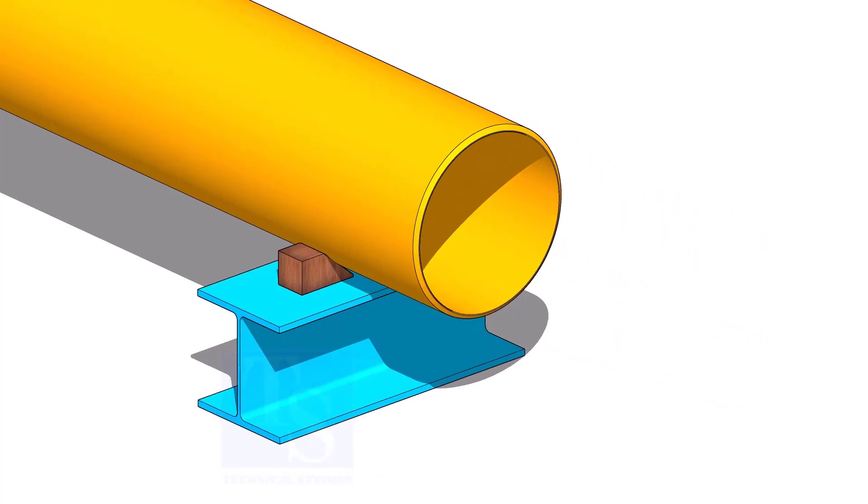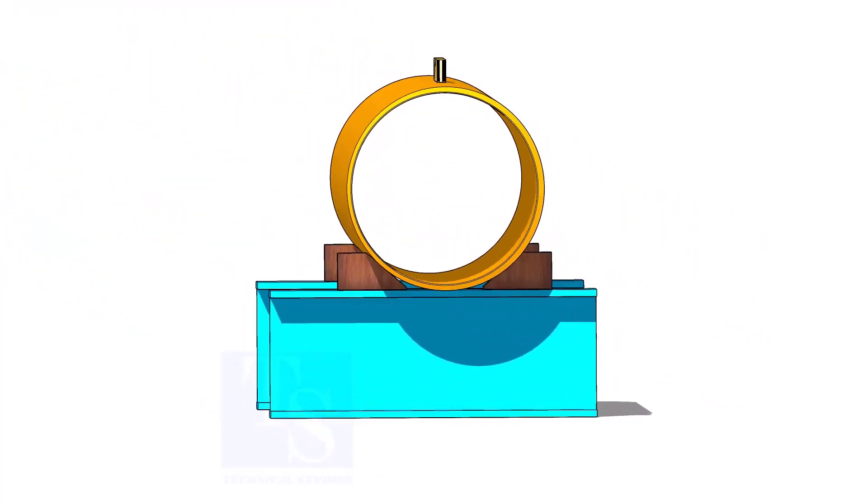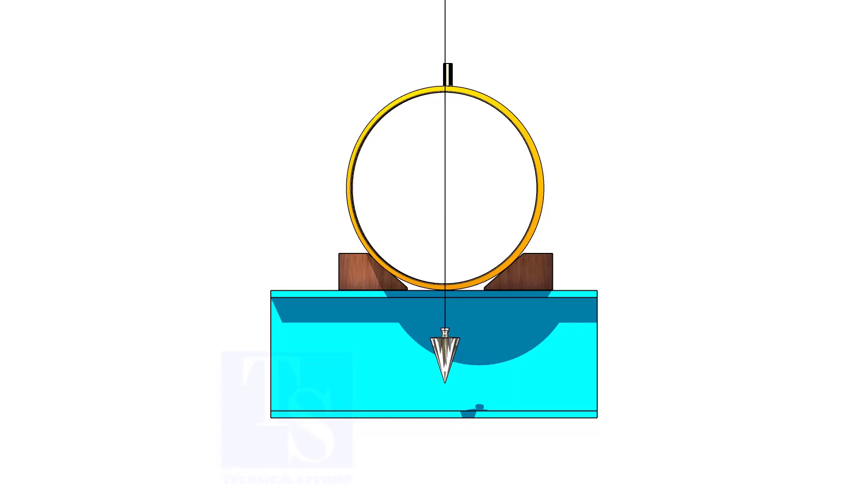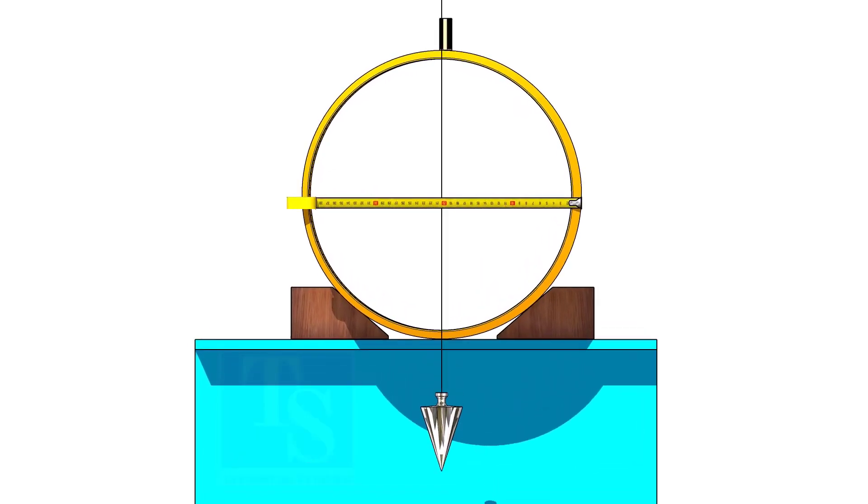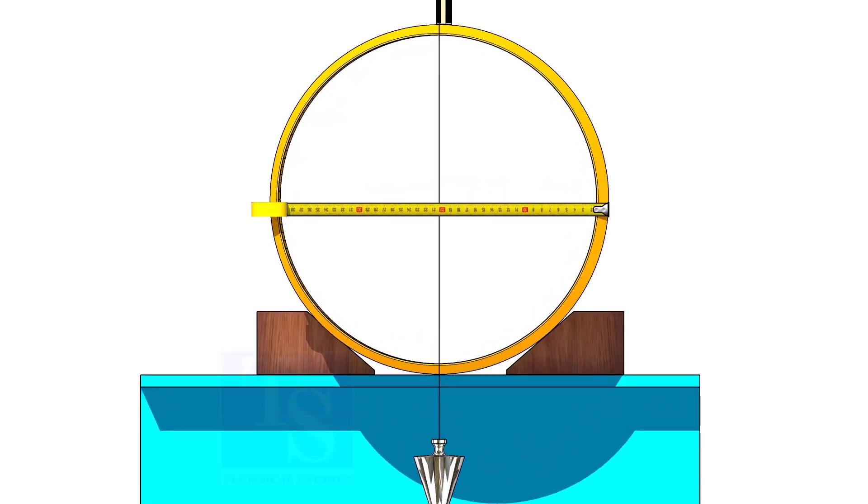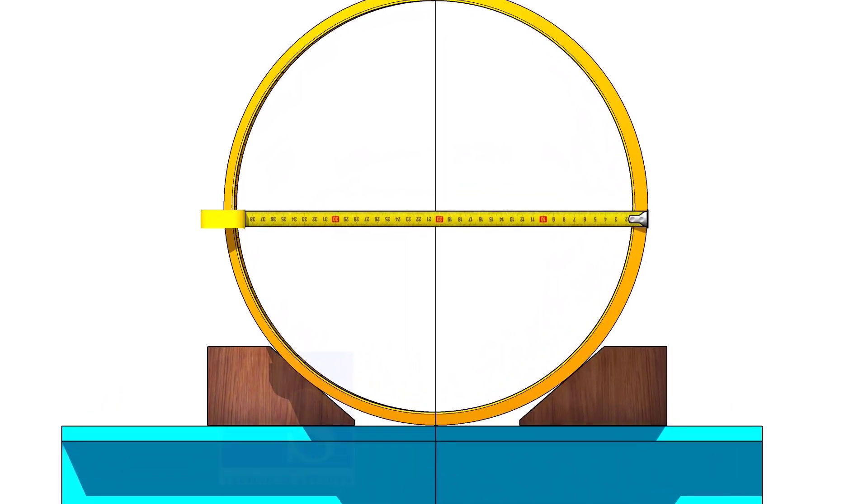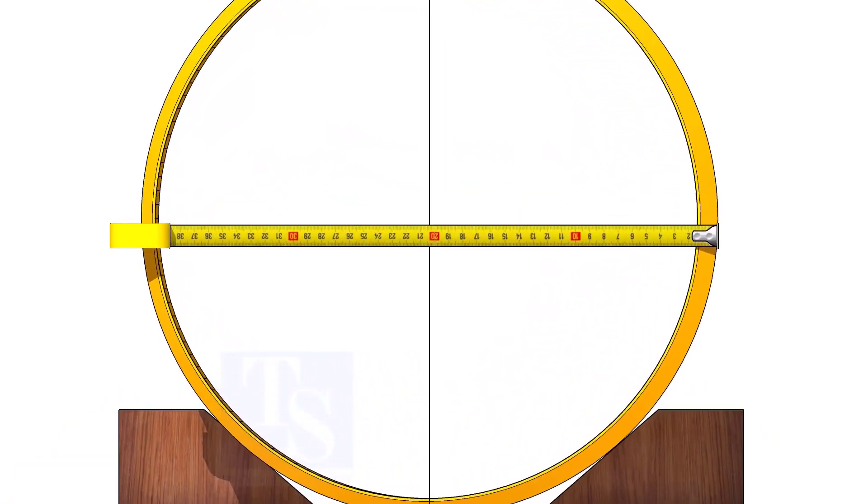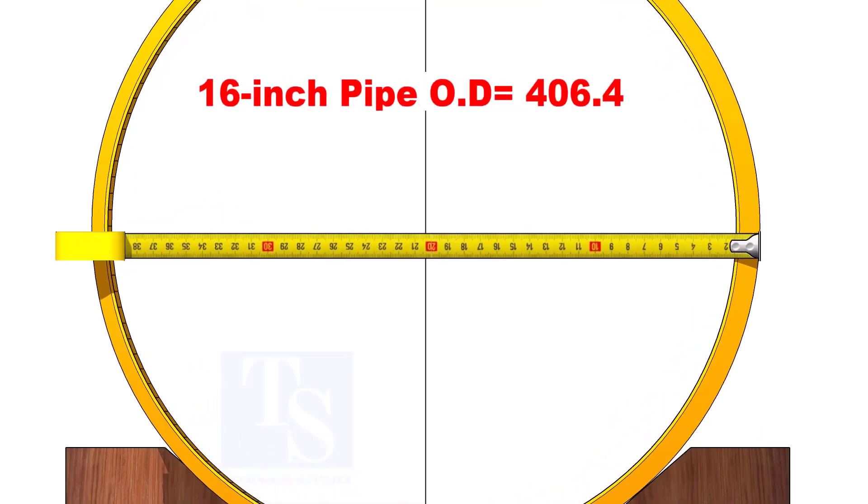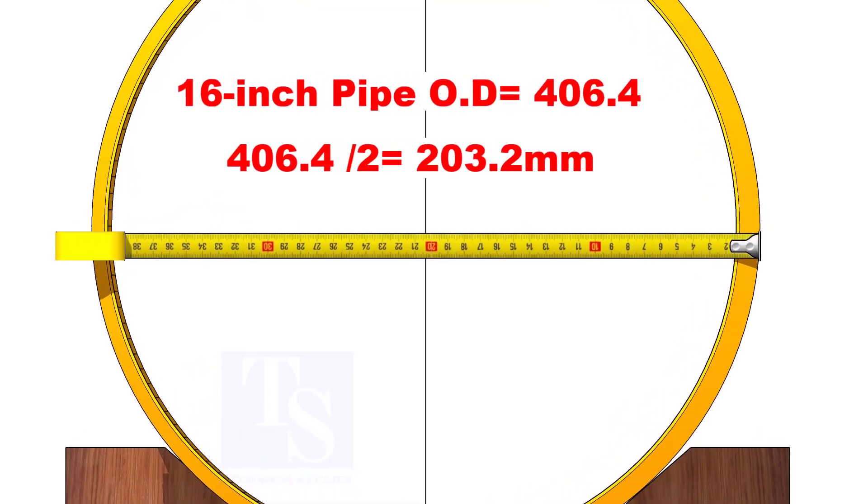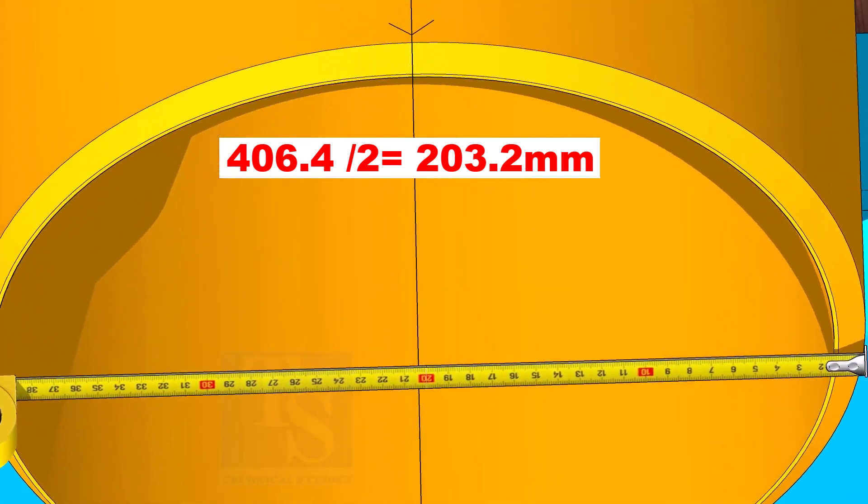Put a plumb at the center of the pipe. Adjust the plumb to the half diameter of the pipe. This is a 16-inch pipe. OD of a 16-inch pipe is 406.4 millimeters. Mark the point where the half OD 203.2 millimeters reaches.